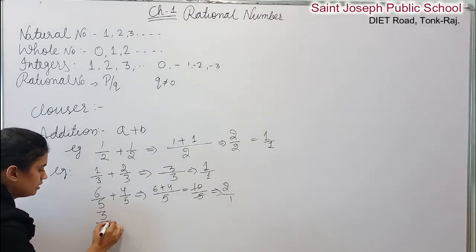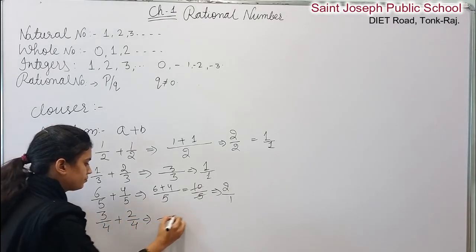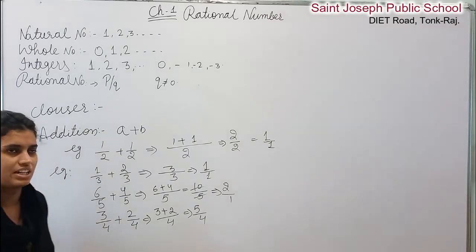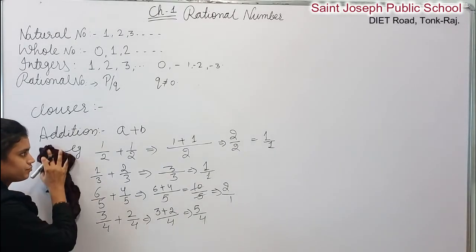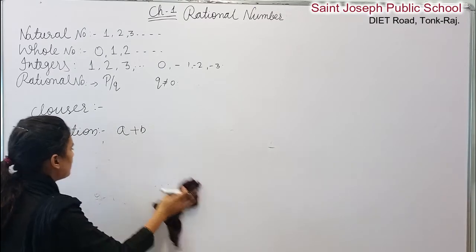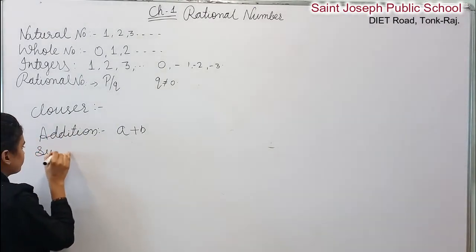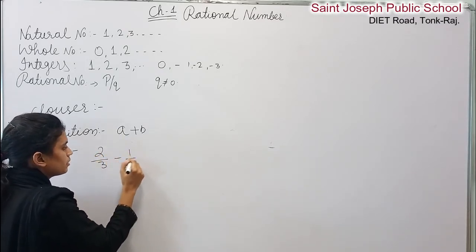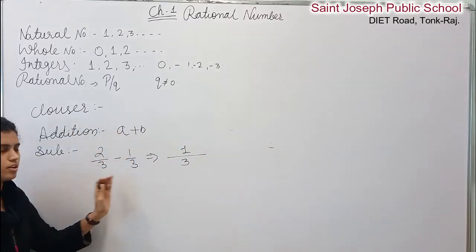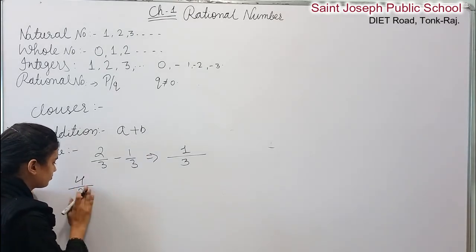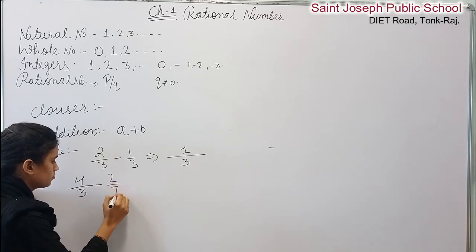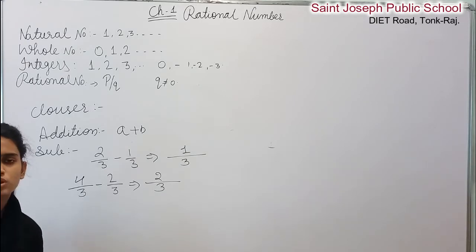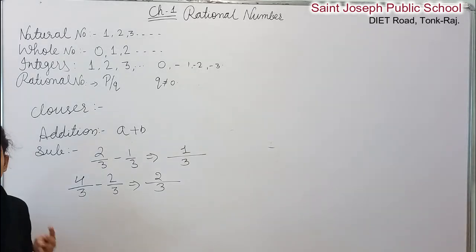Another example: 3 by 4 plus 2 by 4. Adding: 3 plus 2 equals 5 by 4. The result, 2 by 3, is also a rational number. So we can say that the rational number satisfies the closure property.